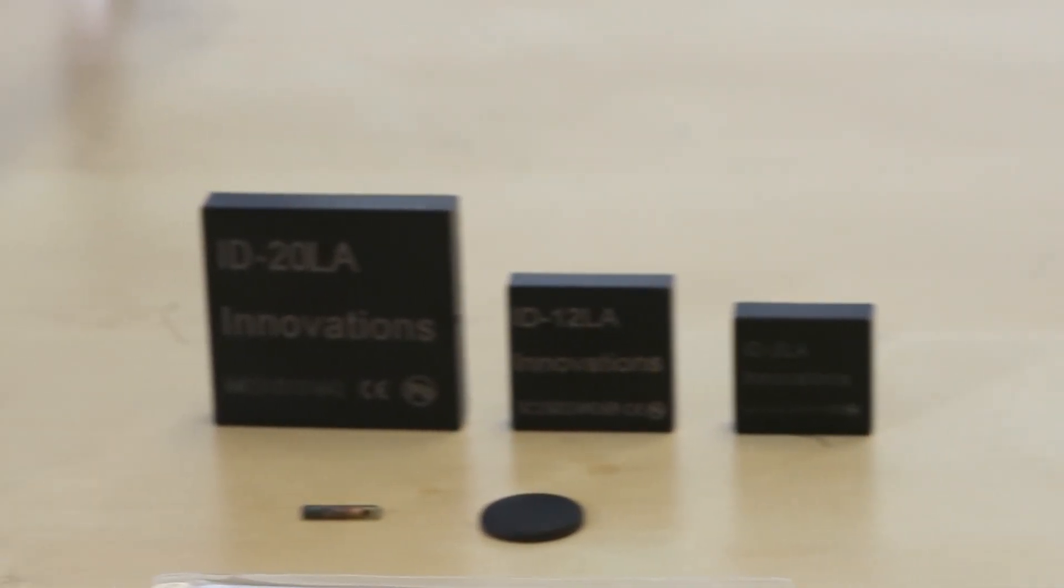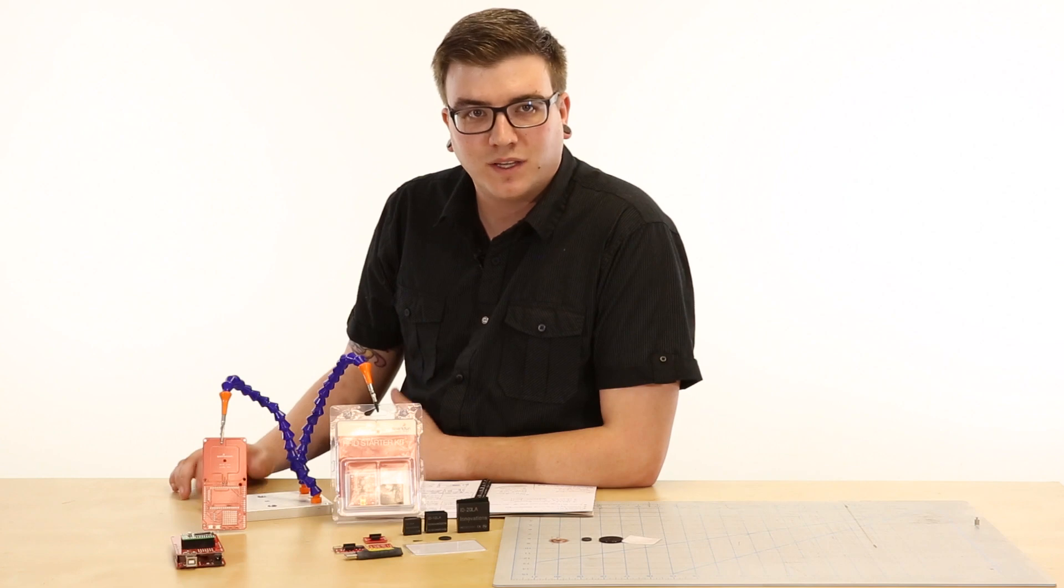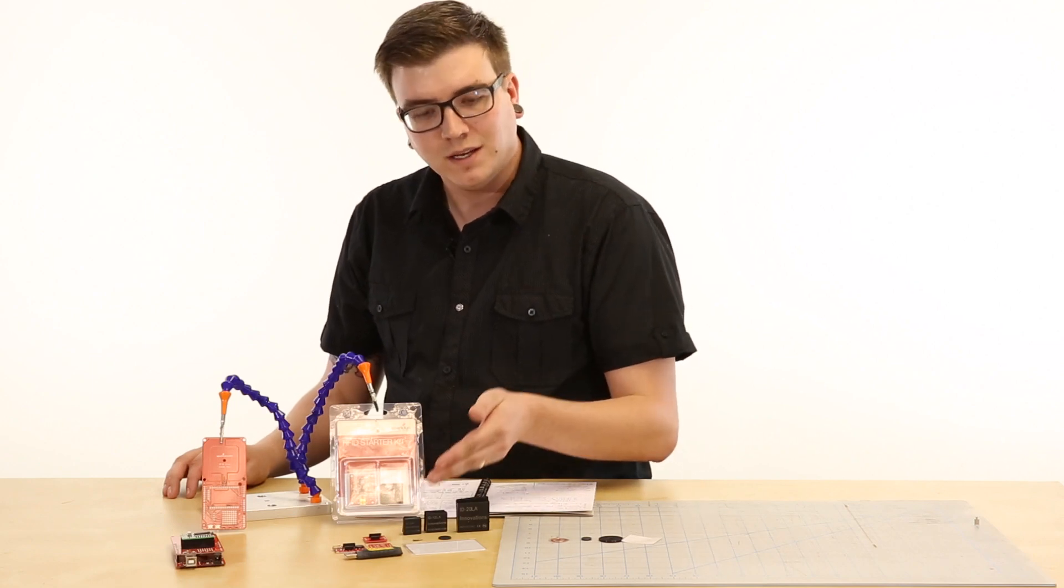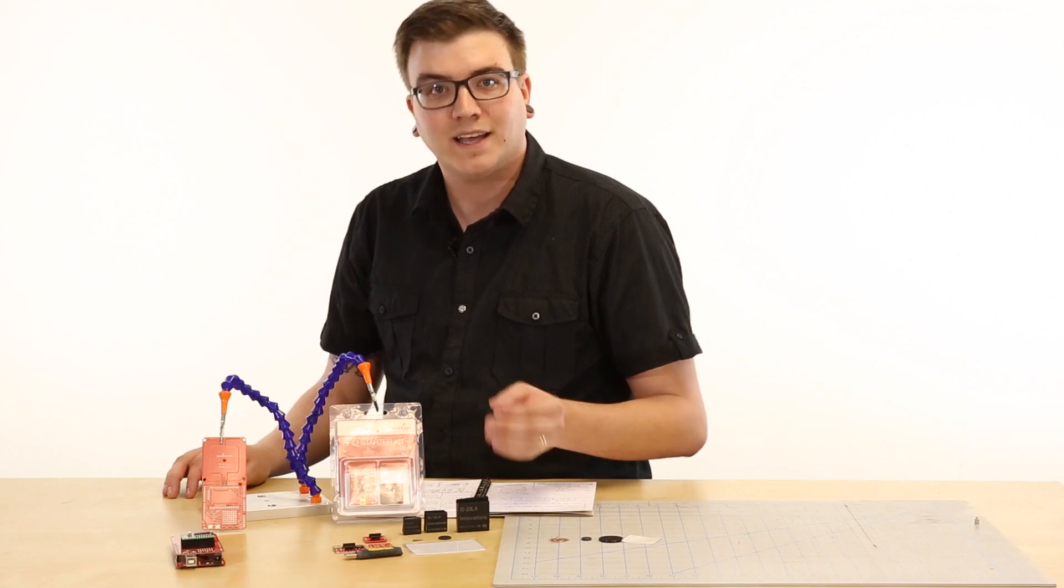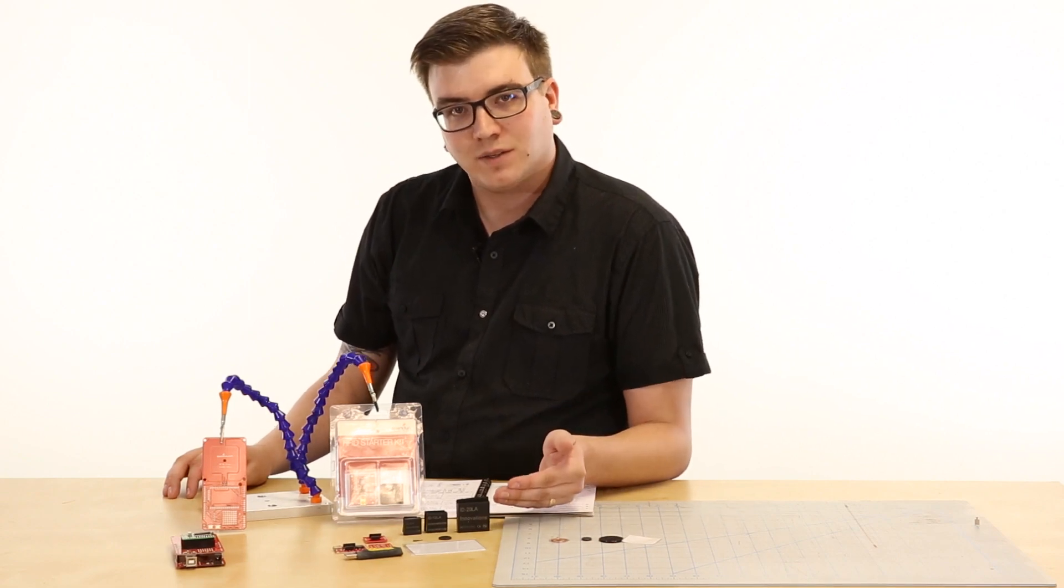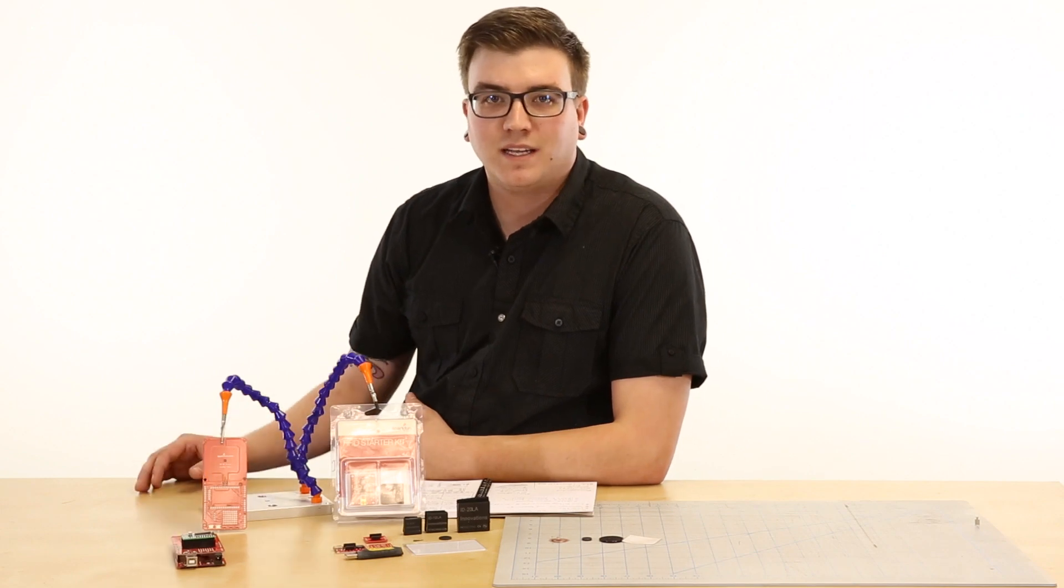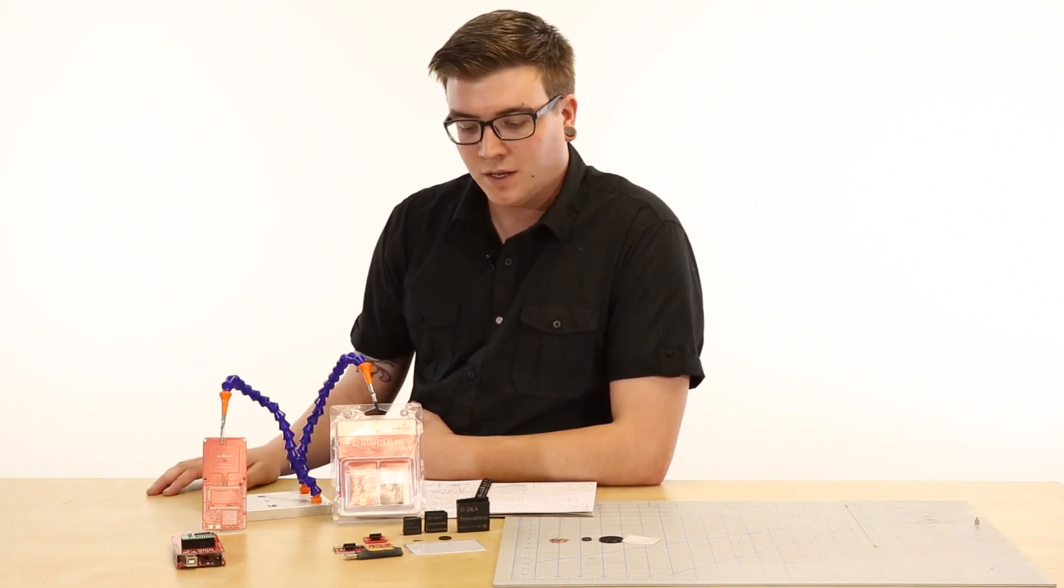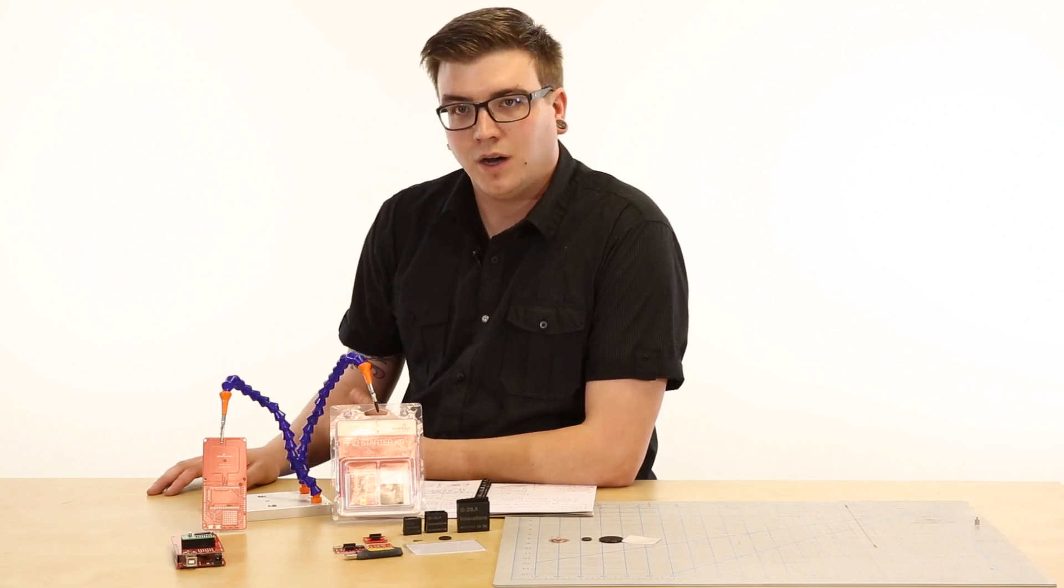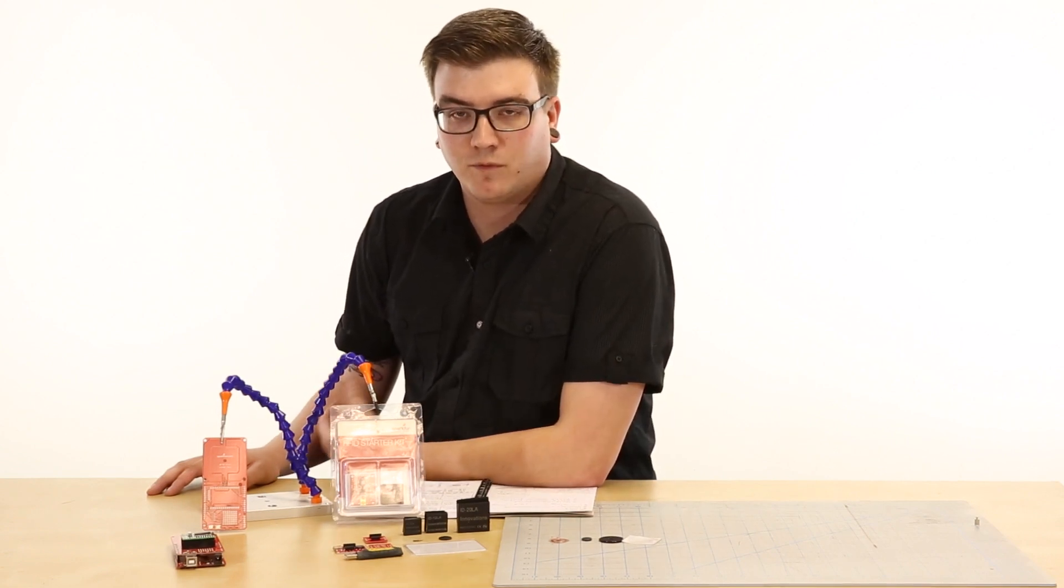After our SM130, that leaves us with the ID series of RFID modules. These series are actually brought to us by ID Innovations, a great company that works with RFID solutions, and they have a three series set here that we offer in our catalog. We have the ID 3, the ID 12, and the ID 20, and these are all LA series. You may be familiar with these from our previous catalog, but the LA is actually low voltage. So this is going to be able to work at 2.8 volts to 5 volts, which gives you a nice range to work with and is more flexible for your situation.